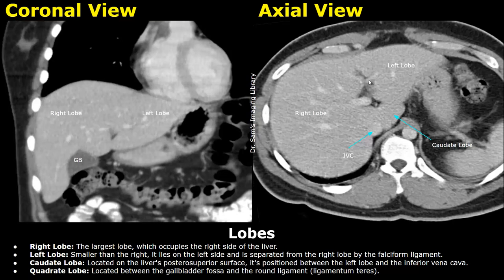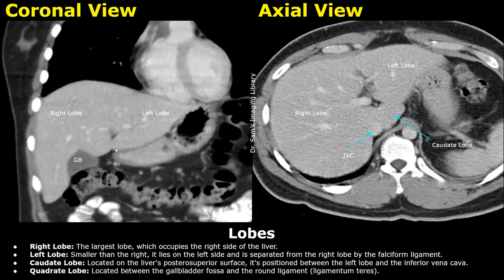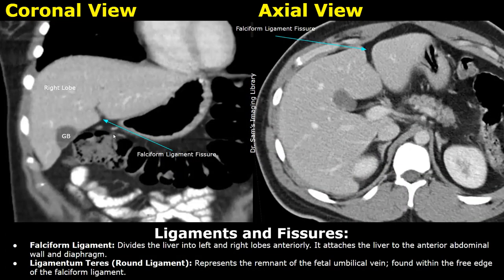The caudate lobe is smaller and is seen at the posterior superior aspect of the liver. It is seen well in the axial view and is positioned between the left lobe and the inferior vena cava. This is the IVC right here; the caudate lobe is present between these two structures. The quadrate lobe is present posteriorly between the gallbladder fossa and the ligamentum teres.